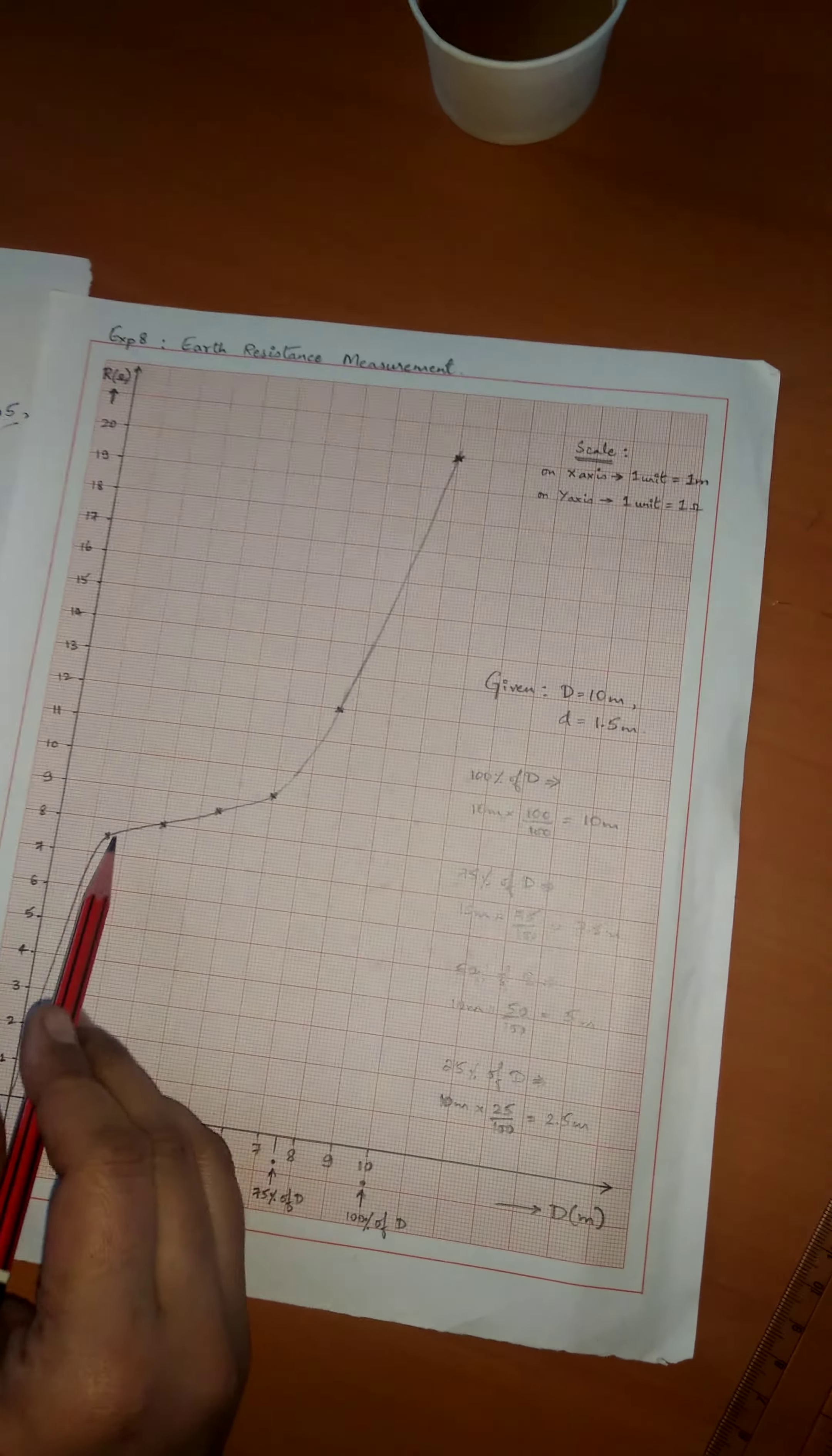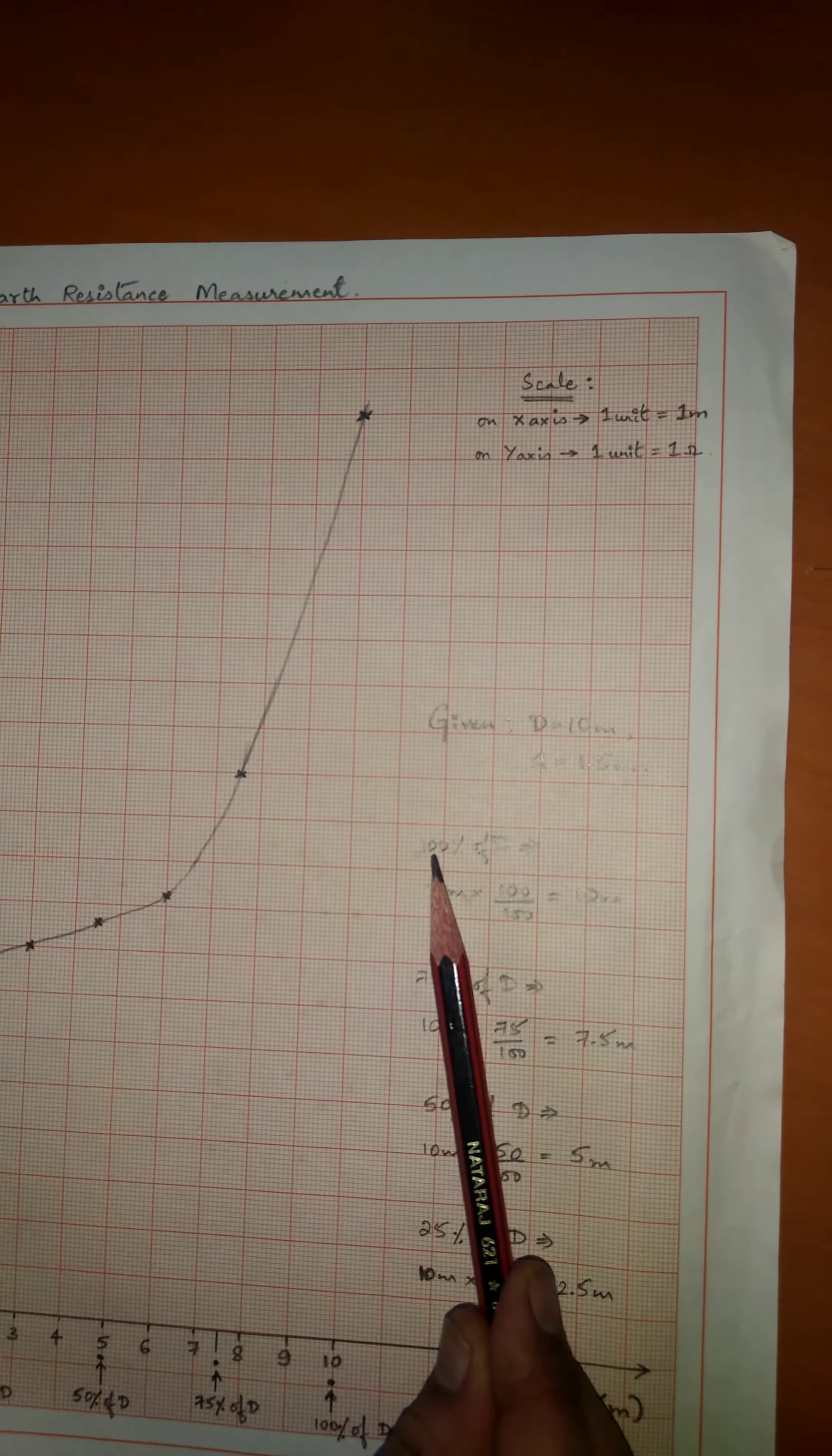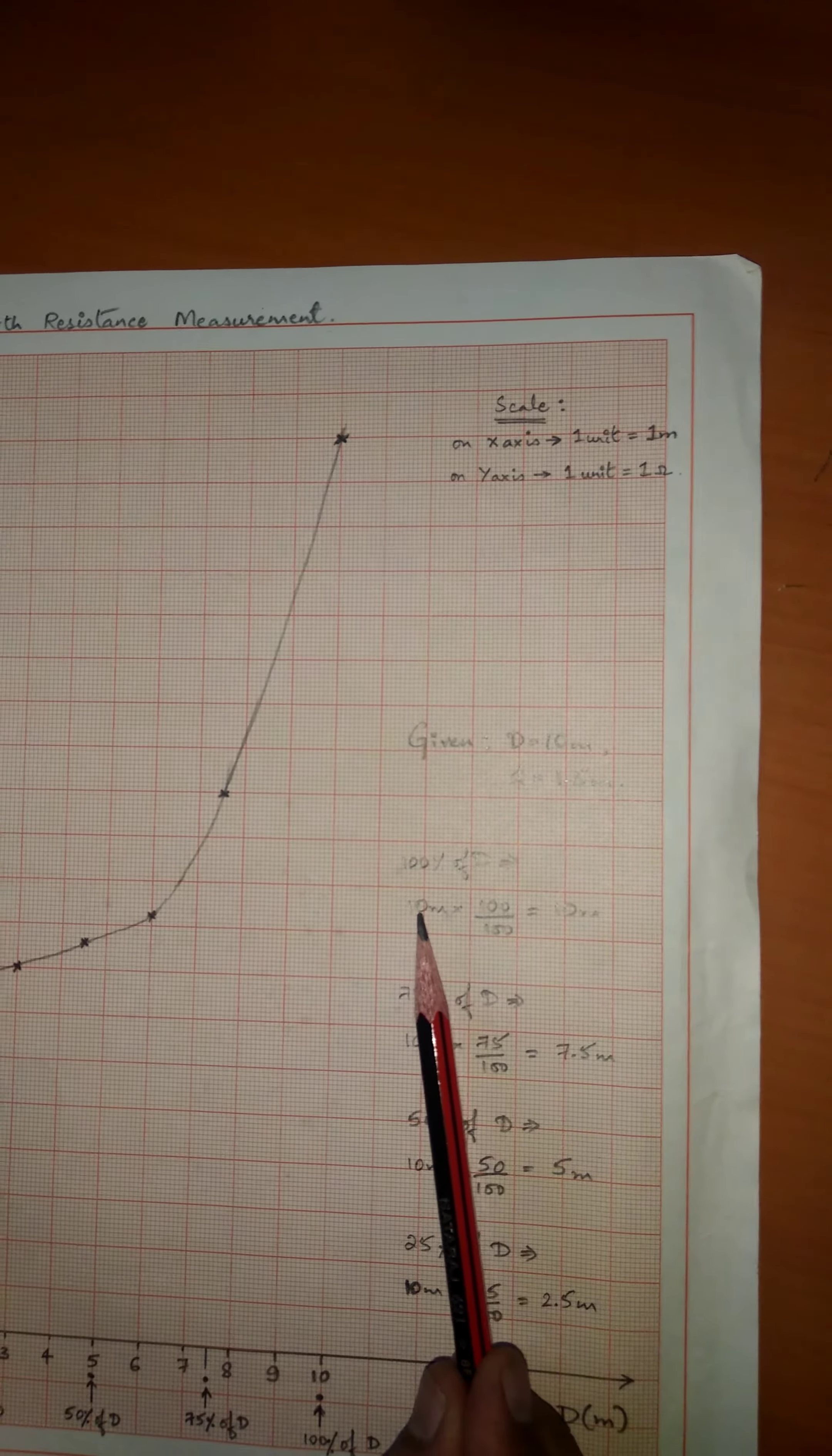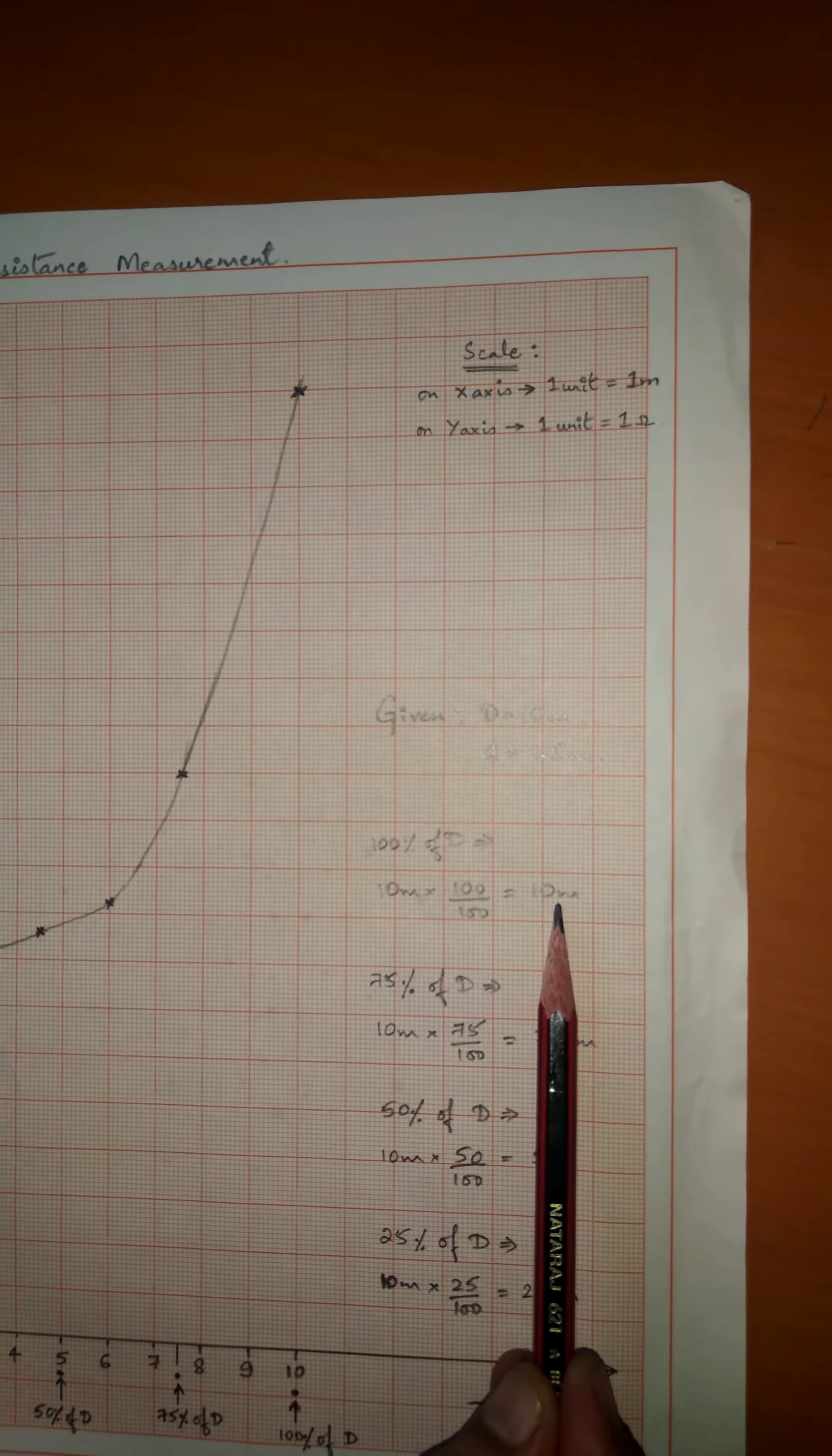Once all the dots are connected, make a note of a small calculation where you need to calculate 100% of D. The capital D is 10 meters, so 100% of 10 meters is 10 meters itself.